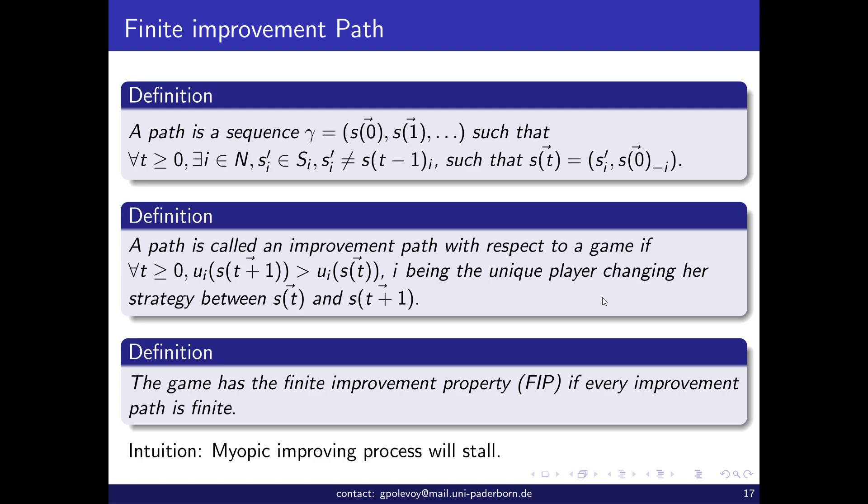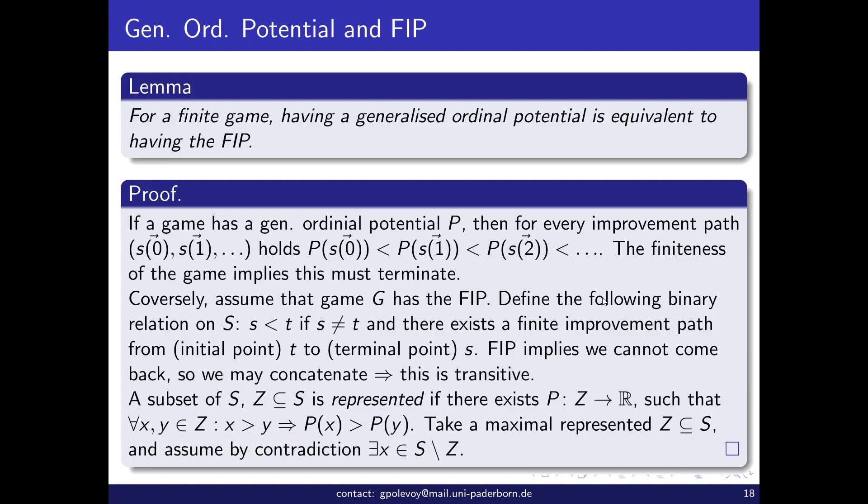This path is a myopic process, and having the finite improvement property means that this process will stall after a finite number of steps. We have defined the path, what it means to have an improvement path, and what it means for a game to have the finite improvement property. A nice lemma: in a finite game, having a generalized ordinal potential is equivalent to having the finite improvement property. In particular, matching pennies does not have a generalized ordinal potential, so it is not surprising that it also does not have the finite improvement property.